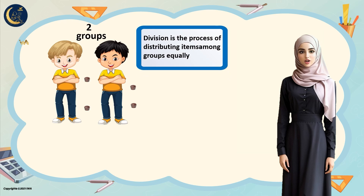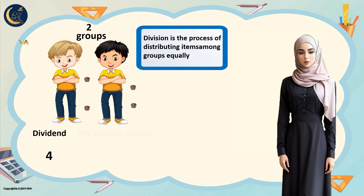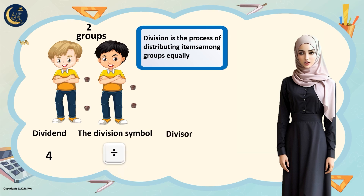What we have done is called division. The division is the process of distributing items among groups equally. How do we write the division sentence? First we write the dividend, which is all the items we want to distribute — here it is the chocolate pieces, how many? Four. Then we write the division symbol, then we write the divisor, which is the number of groups — how many groups? Two.